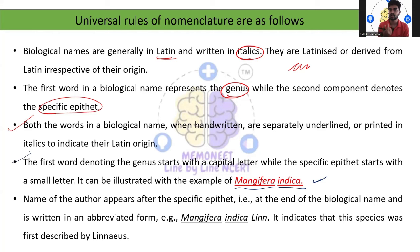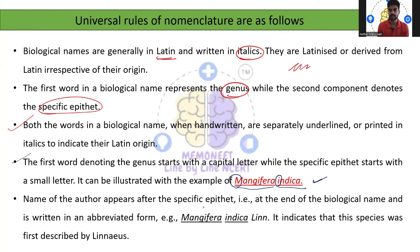The fourth rule: while denoting the genus name — the first word — the starting letter will always be a capital letter. For example, M is capital in Mangifera. The second component, that is the species name, should always start with a small letter, as indicated here. This is followed in every naming convention.